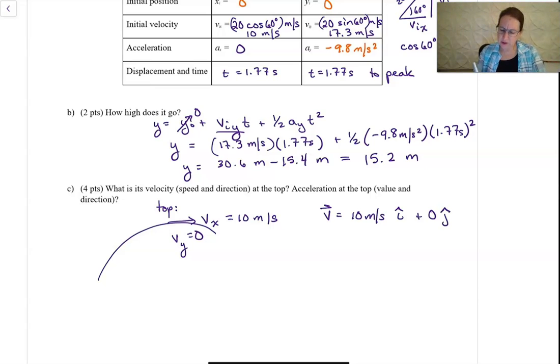So the acceleration at the top, well, it's 0 in the X, 0 i-hat, minus 9.8 meters per second squared in the j-hat direction. There's still acceleration. Gravity is still working, and it's still pointing down. There's still no acceleration horizontal.